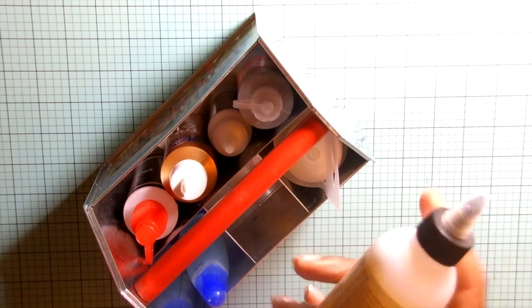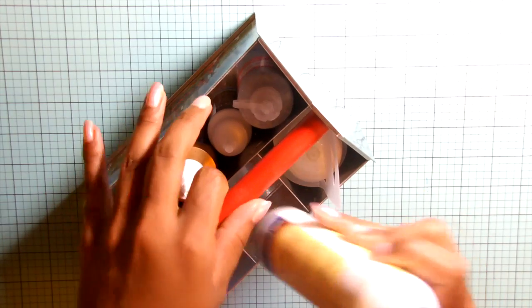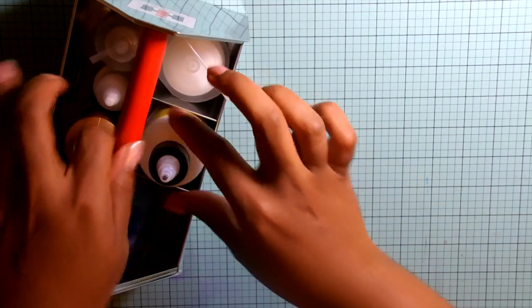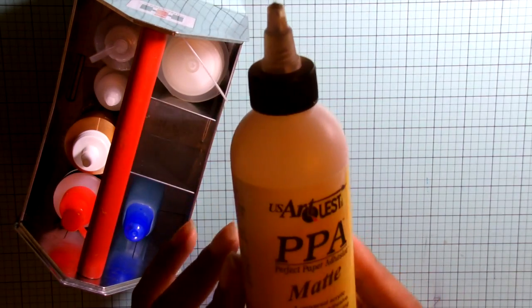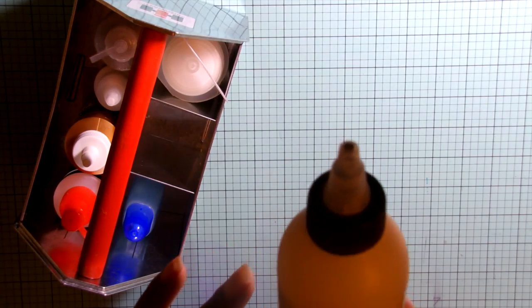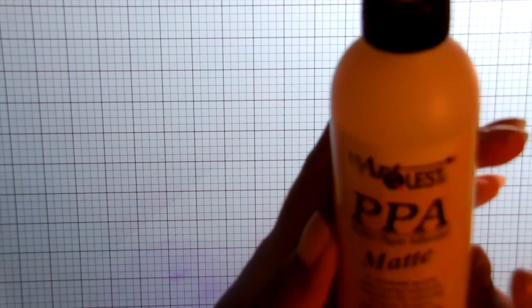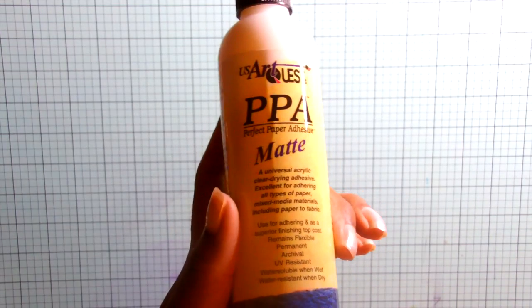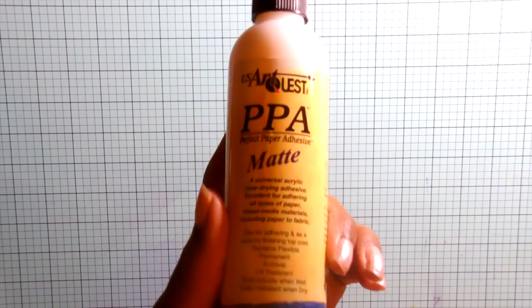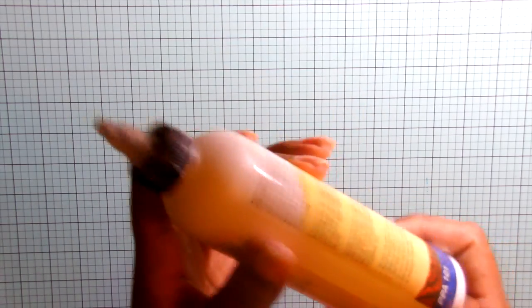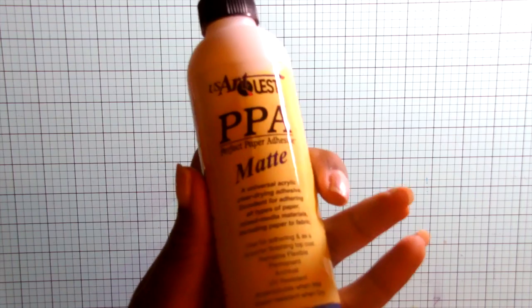My stash of adhesives consists of, let's see what we have here. So, I have this PPA matte adhesive. It's called Perfect Paper Adhesive. And this is like for paper, mixed media, fabric. I mostly use this when I'm doing mini albums so I don't have to use my ATG a whole lot. I can use this to adhere the paper to the chipboard.